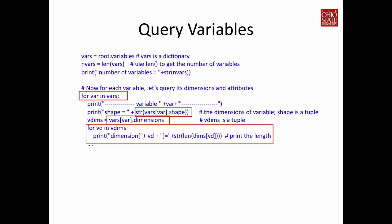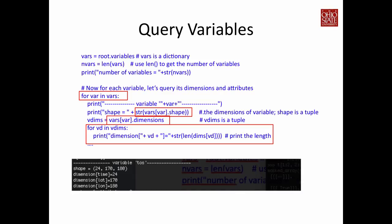vdim represents the dimensions of the variable, which can have multiple components — it is a tuple. I use a for loop to loop through each of the dimensions and print out the length of each. Looking at the output, the shape queried by .shape is 24 by 170 by 180. The for loop also prints out the name and length of each dimension. This information is specific to the variable called tos.